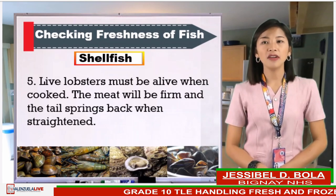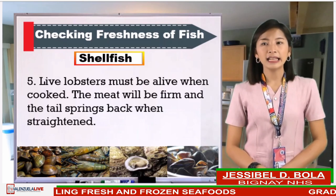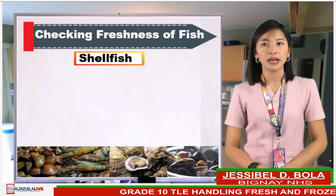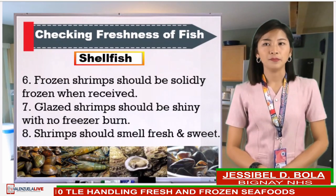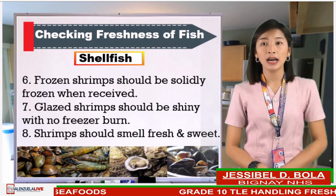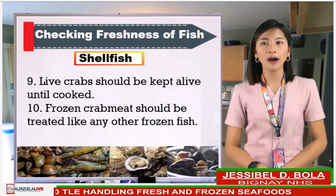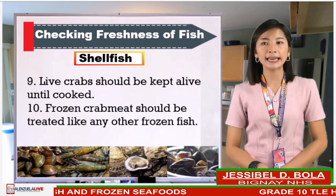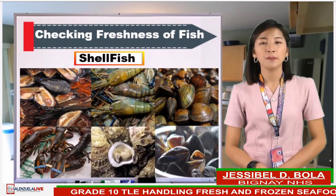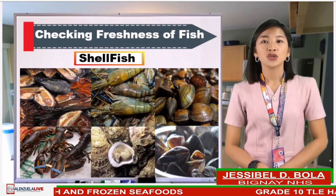Live lobsters must be alive when cooked — the meat will be firm and the tail springs back when straightened. A strong fishy smell indicates age or spoilage. Frozen shrimp should be solidly frozen when received. Glazed shrimp should be shiny with no freezer burn. Shrimp should smell fresh and sweet. Live crabs should be kept alive until cooked. Frozen crab meat should be treated like any other frozen fish. Those are the key points to consider when checking freshness of shellfish like mussels, lobsters, shrimp, and oysters.